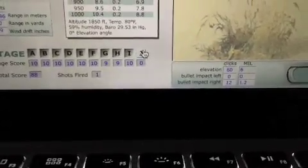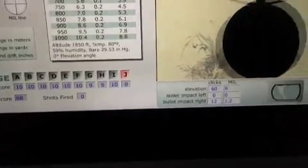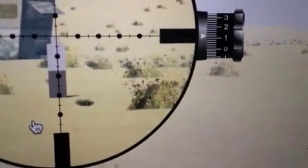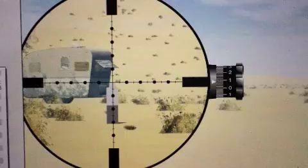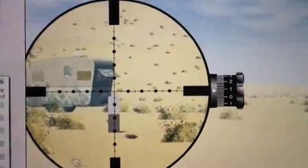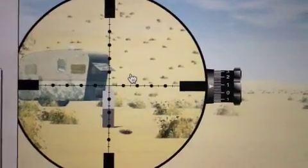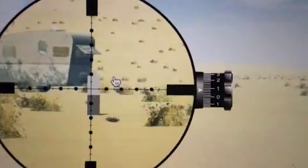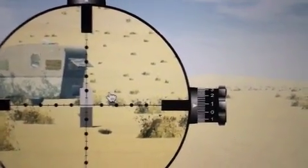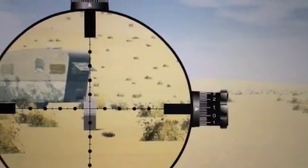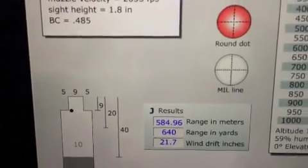One more. He's a little closer this time, looks like he's about 3 mils high. And being that he's a little closer, I need to actually hold a little lower on this guy and fire. 640 yards.